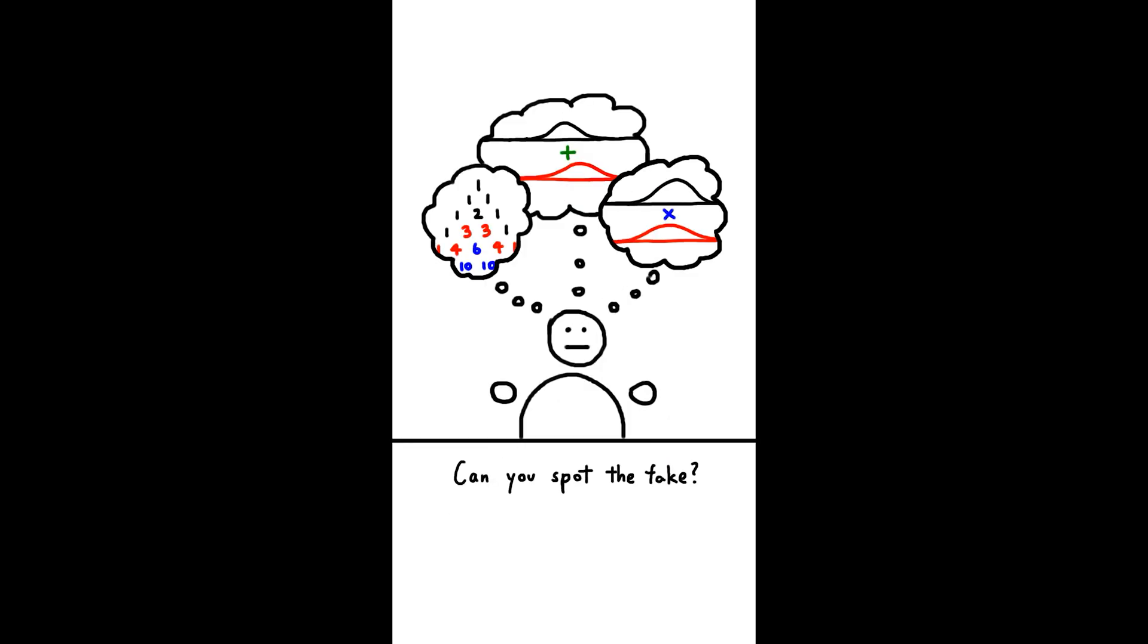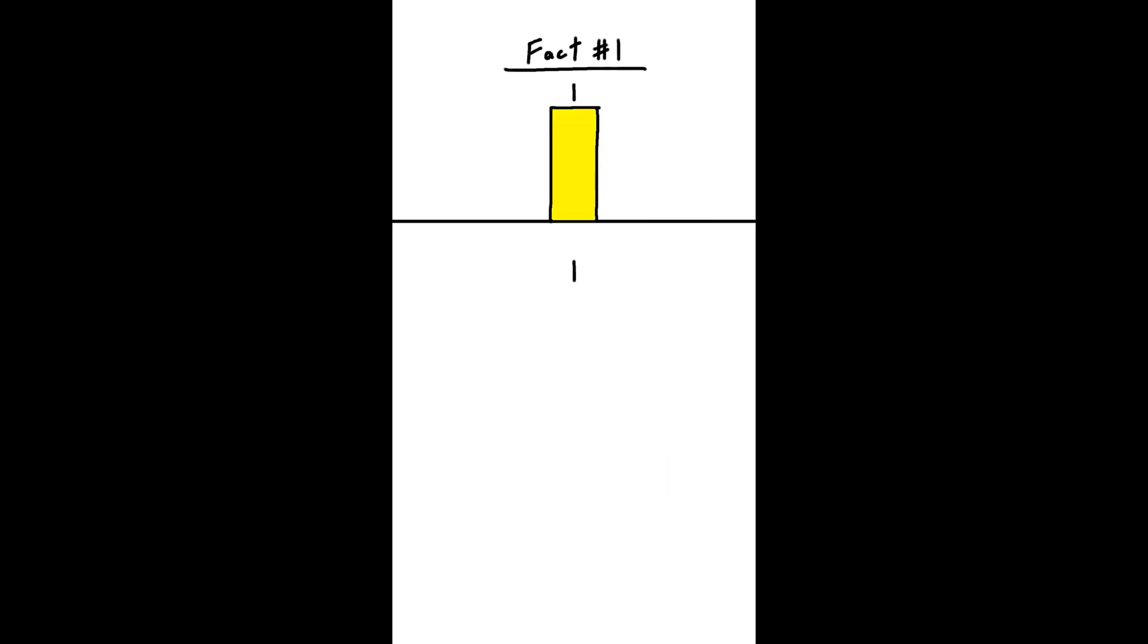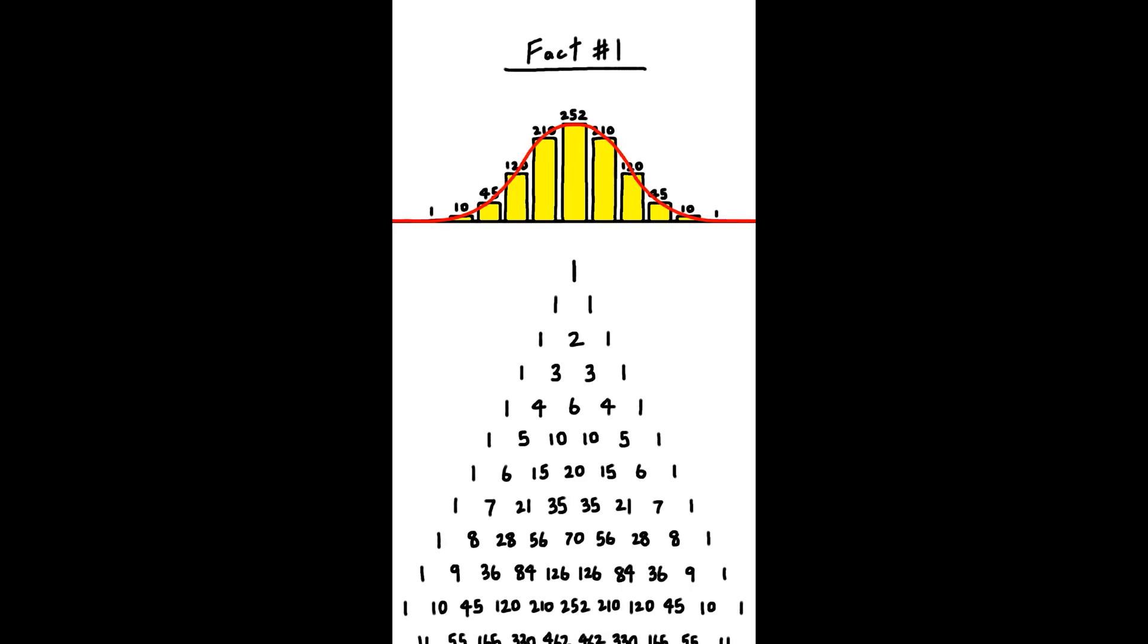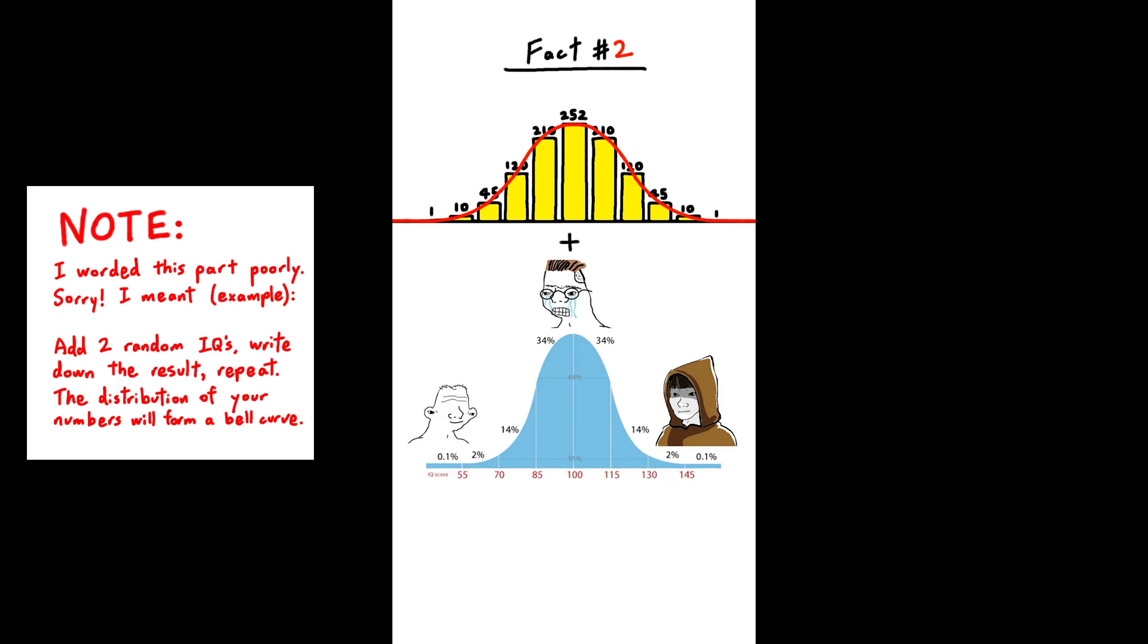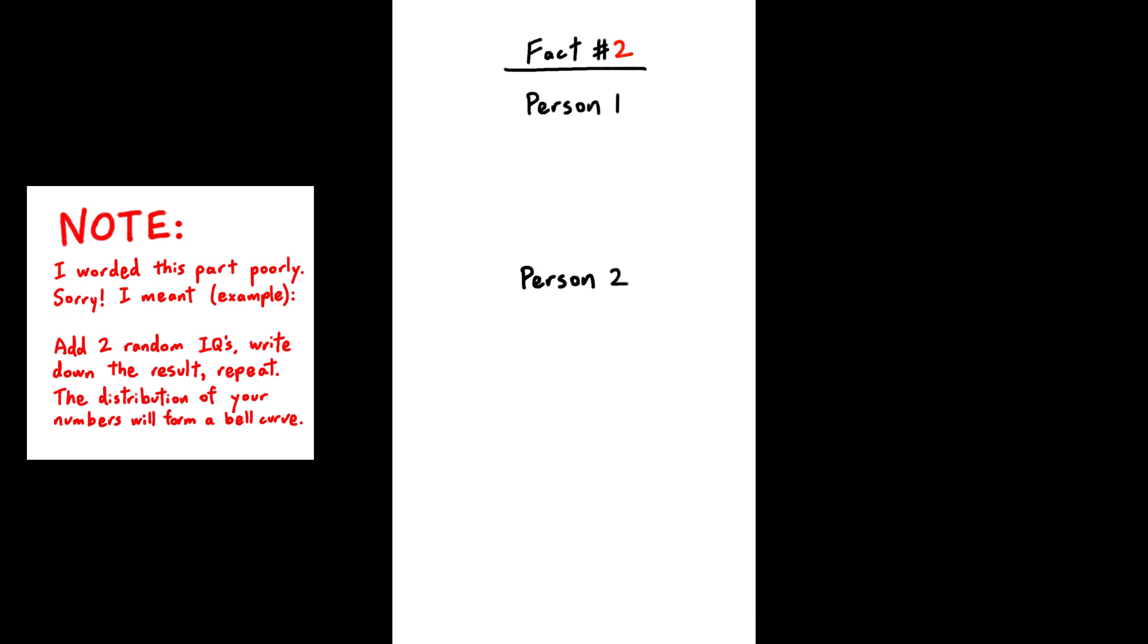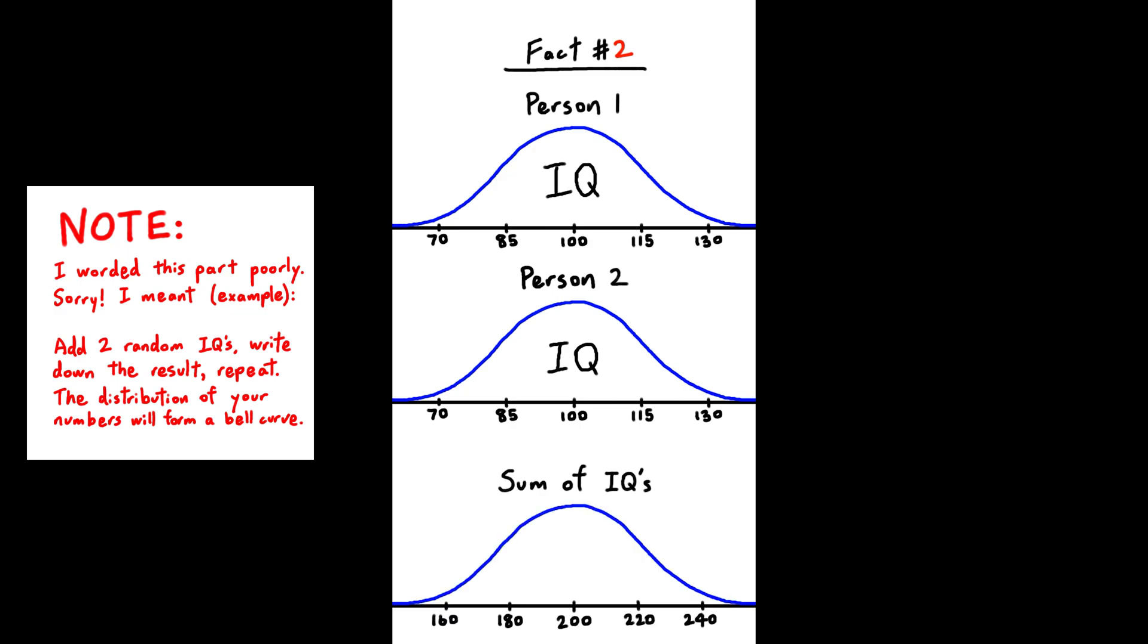Two truths and a lie, but with math, can you spot the fake? First, if you keep going down Pascal's triangle, the numbers approach a normal distribution, like on IQ charts. Speaking of normal distributions, if you add two bell curves together, you'll get another one. For example, if you randomly find two people and add their IQs together, the distribution will still be a bell curve.